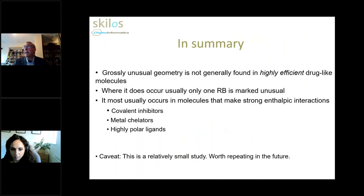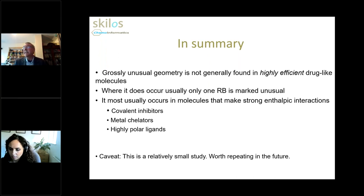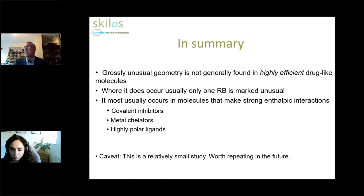In summary, at least in this dataset, we have not found grossly unusual geometry in drug-like molecules — not in highly efficient drug-like molecules that have been optimized for activity. That's what we generally find in the PDB. It doesn't mean you won't find it while trying to get to high affinity, but we do not generally find it in highly efficient drug-like molecules. Usually only one rotatable bond is marked unusual in most of these structures, and it most usually occurs in molecules that make strong enthalpic interactions: covalent inhibitors, metal chelators, and highly polar substrates.